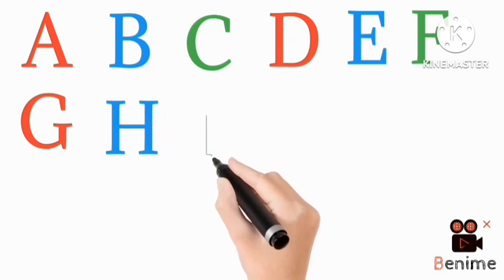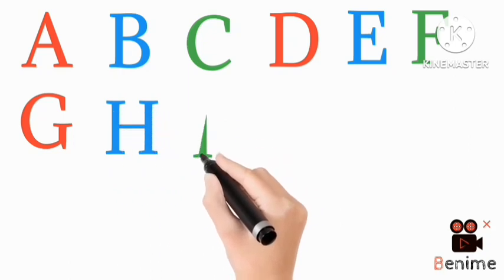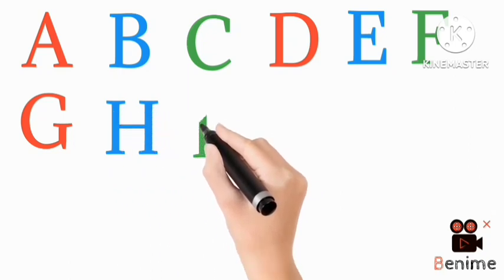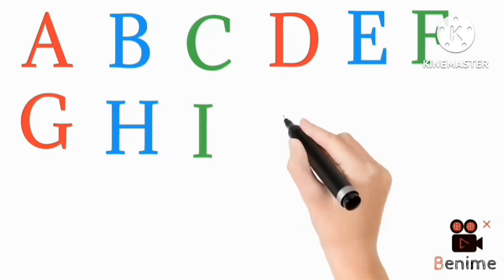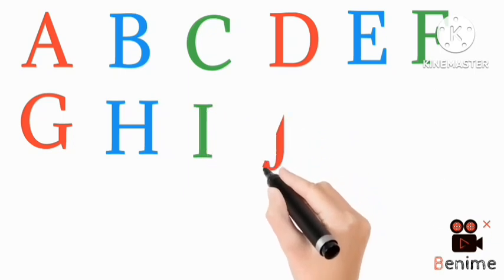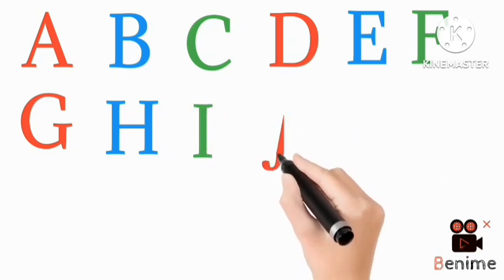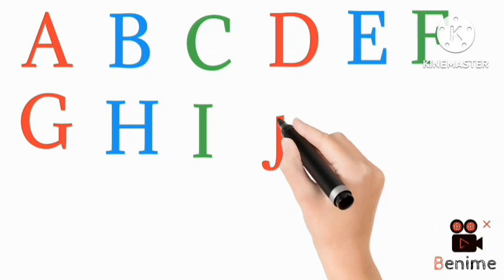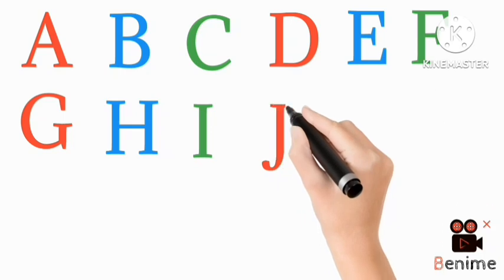Green color I, I for Ice Cream. Red color J, J for Jug.